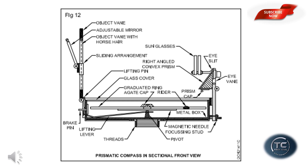The parts of the prismatic compass include: object with horse hair, adjustable mirror, lifting lever, and right angled convex prism. Here we have assignment questions.